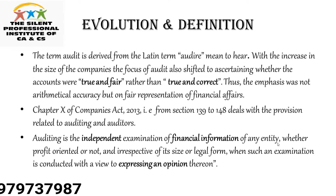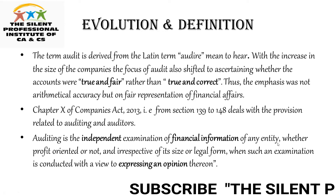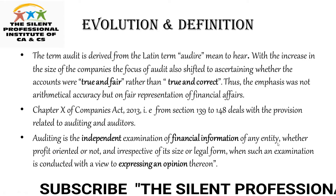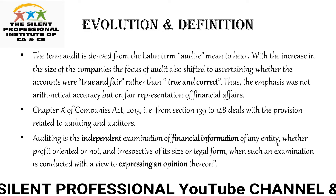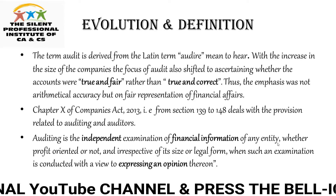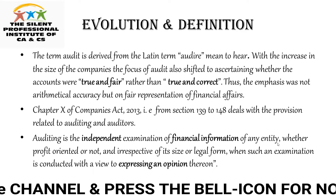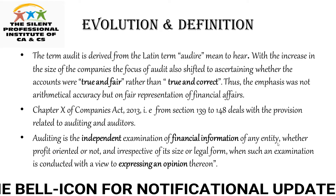Auditing is the independent examination — independent means that it is free from any kind of bias and prejudices. Section 141, subsection 3 of the Companies Act 2013 states the disqualification of auditor. He should not be the employee of the company, and his relative should not be the employee of the company. Before becoming an auditor, he should be free from any kind of prejudices which may hamper his independence.